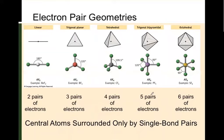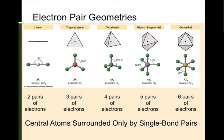Here are five of the most common electron pair geometries. We have linear, trigonal planar, tetrahedral, trigonal bipyramidal, and octahedral. Linear has only two electron domains — either bond pairs or lone pairs — and they are separated by 180 degrees.